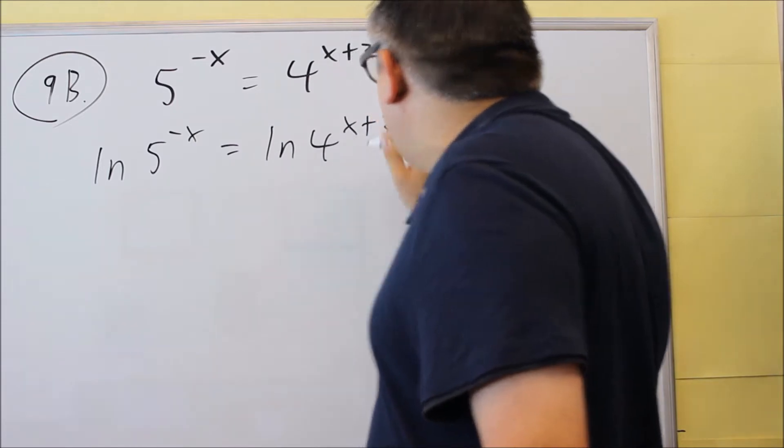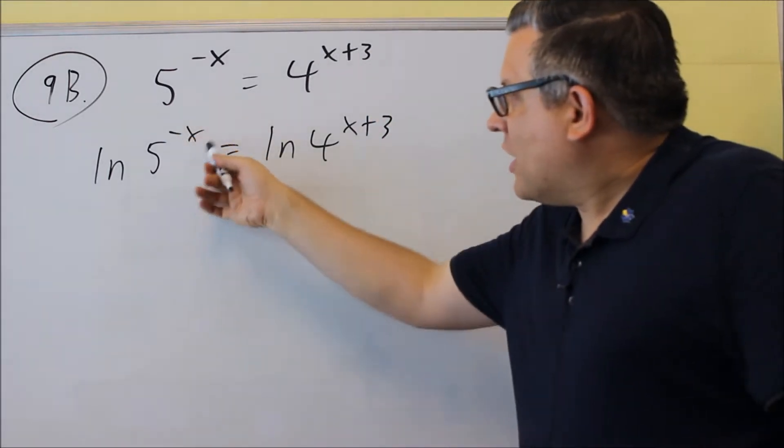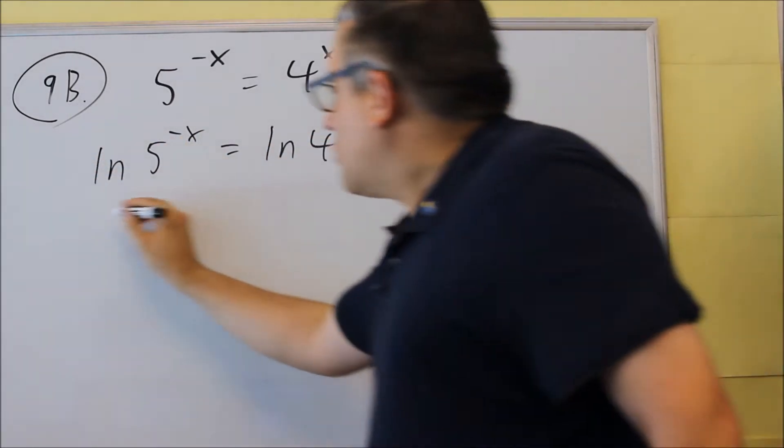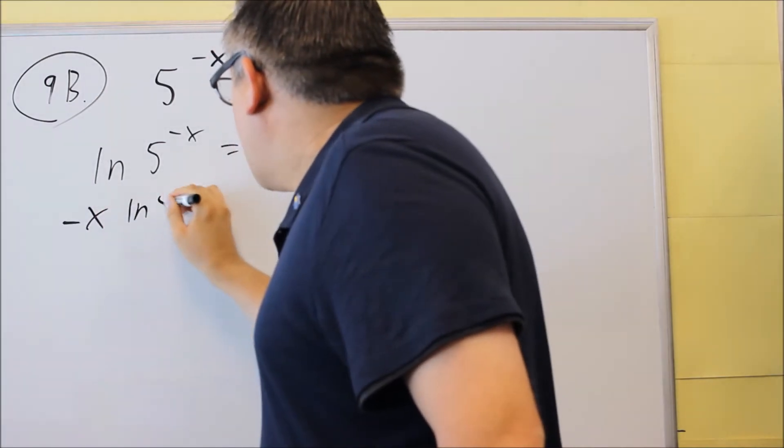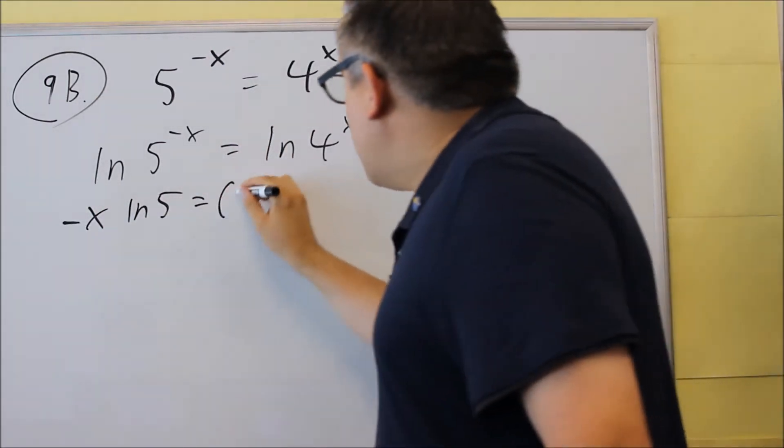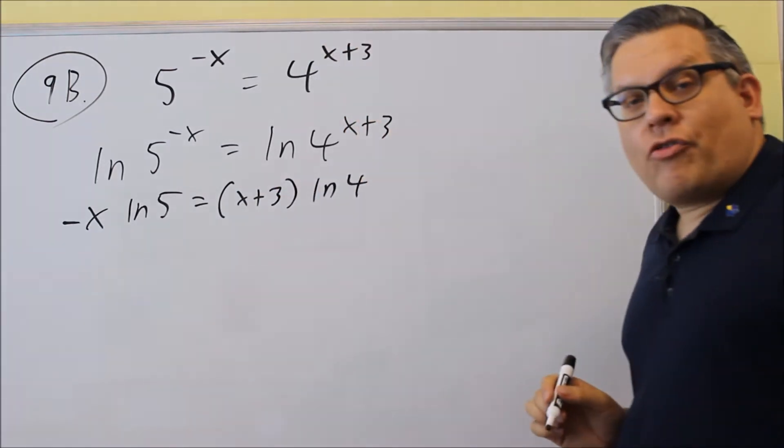And the whole point of doing that is because then we can use our log property that allows us to take that exponent and move it down in front. So we're going to do that for each of these. So negative x comes down, I get negative x ln 5. For this other one, x plus 3 also comes down in front. So x plus 3, then I have natural log of 4.